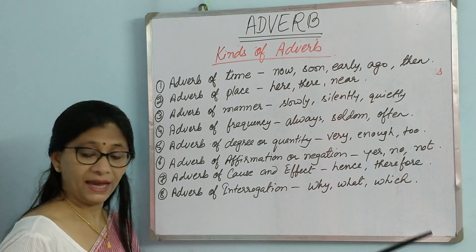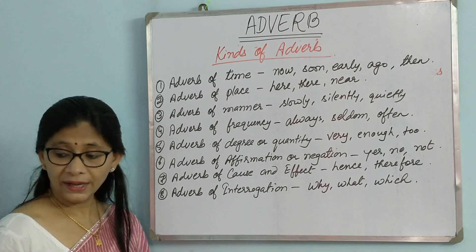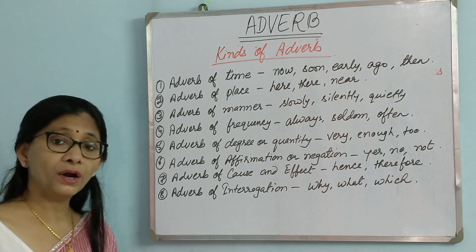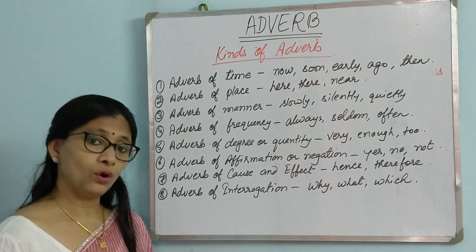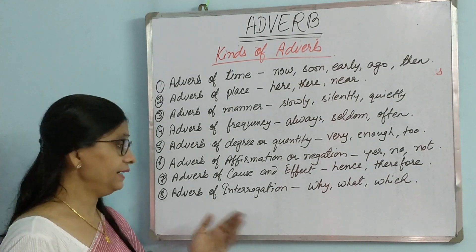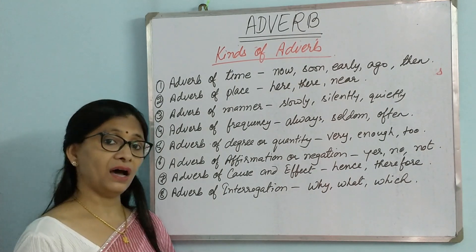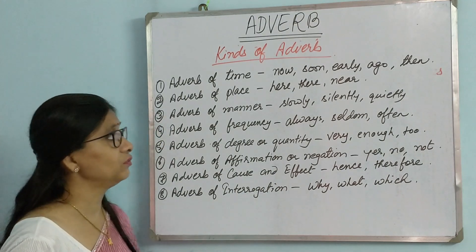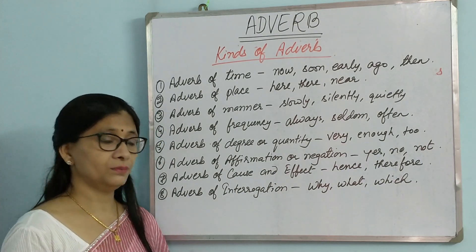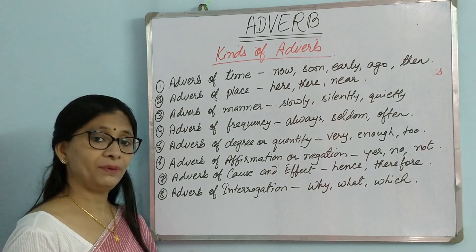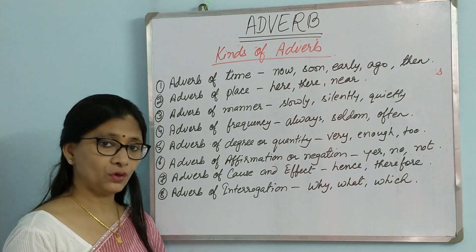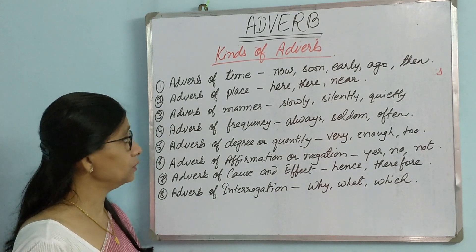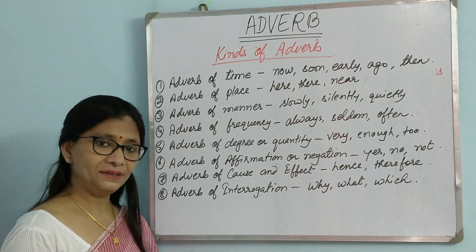Then adverb of interrogation: 'Why did you go there?' 'Where are you?' 'What did you do?' All these are adverbs of interrogation, which ask questions. So these are the different types of adverbs, and you shall be getting a worksheet on this to practice identifying which adverb belongs to which kind.